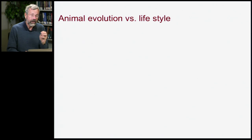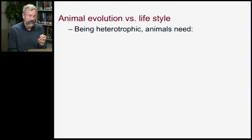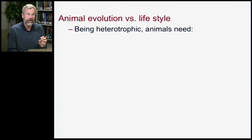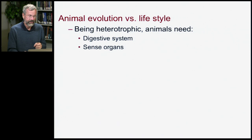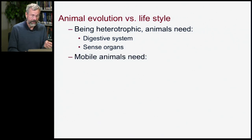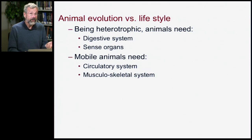Now, in looking at animal evolution, we want to be paying particular attention to their lifestyle. Being heterotrophic, animals need a digestive system. They need sense organs. And mobile animals need a circulatory system and a musculoskeletal system.